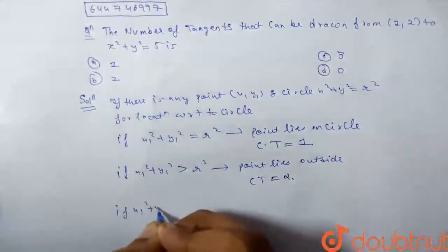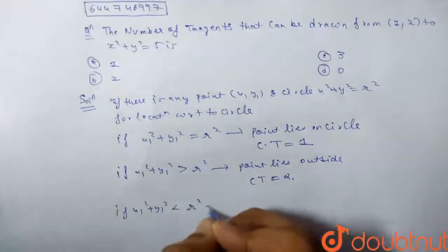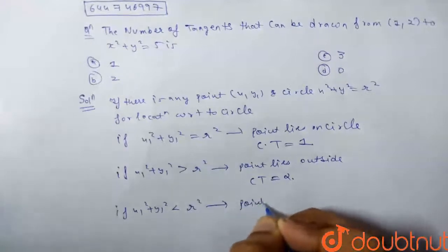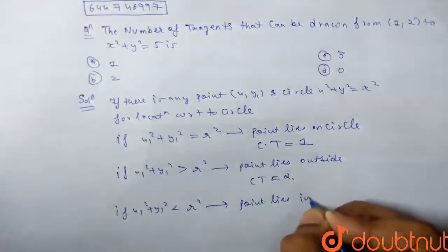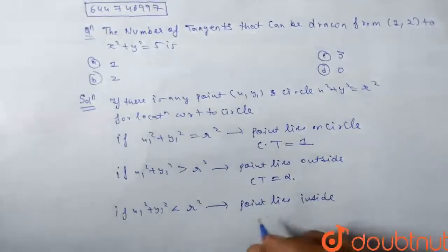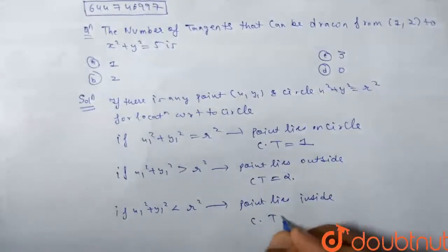And if x₁² + y₁² < r², the point lies inside. If the point is inside, we cannot draw any tangent, therefore the common tangent is equal to 0.